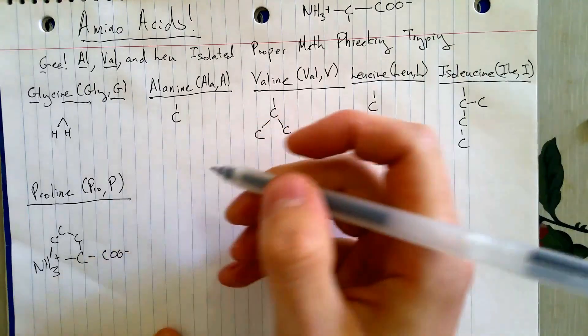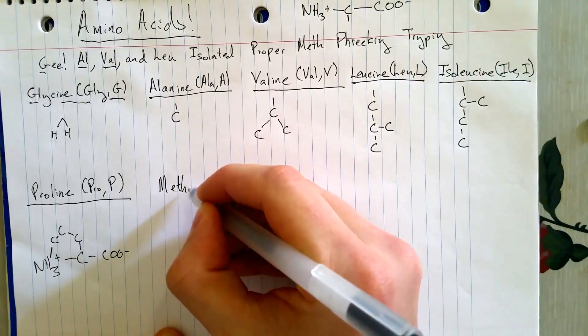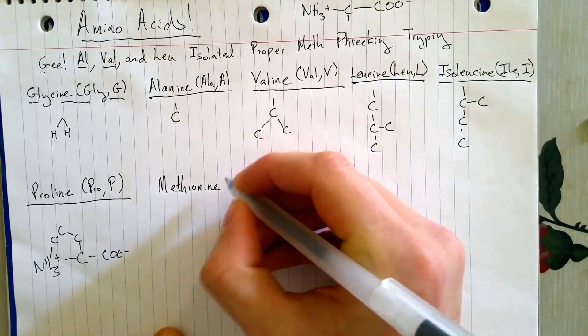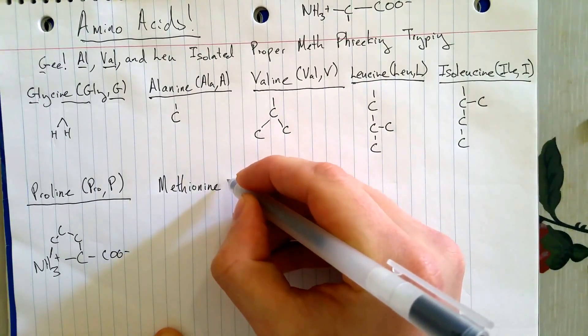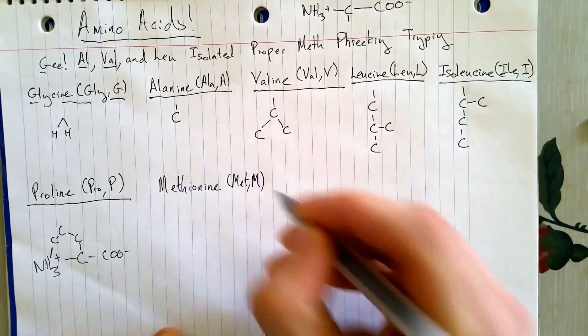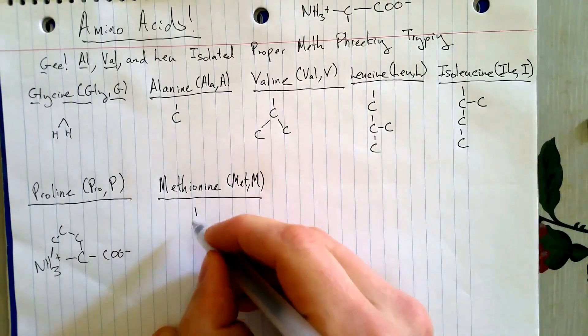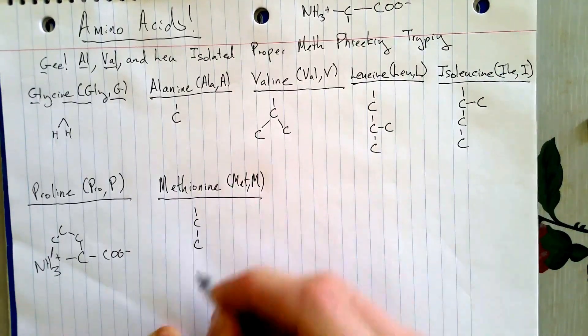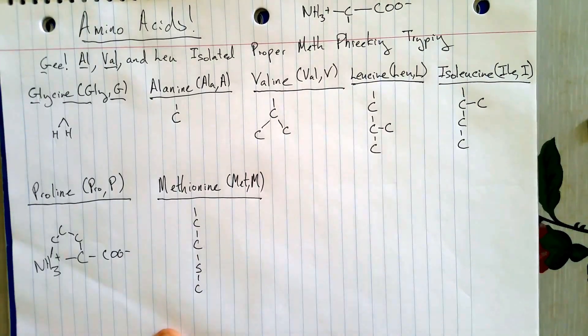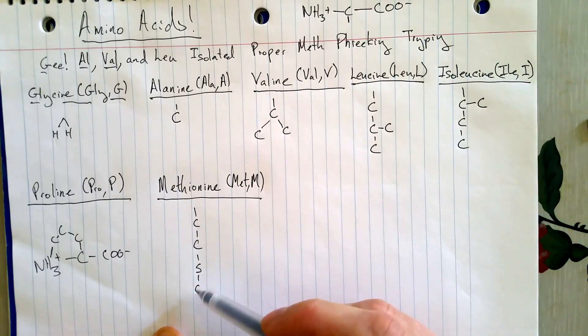So then they got high on meth. MET M, so very straightforward there. And I like to think about this as still a three-carbon chain. But meth is a pretty messed up drug, so this three-carbon chain is pretty messed up. It's got the sulfur before the final carbon.